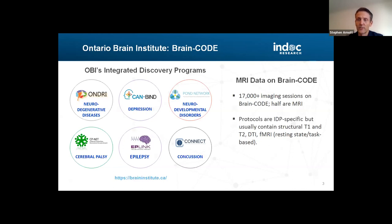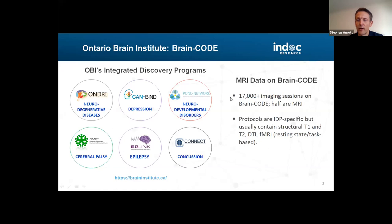Each of these programs is characterized by deep phenotyping, collecting neuropsych data, clinical omics, wearable sensor data, and a host of neuroimaging studies. Currently, there are over 17,000 imaging data sessions on Brain Code, and half of them are MRI. I'd like to talk about how we make those data available for external use and some of the pitfalls regarding sensitive information.